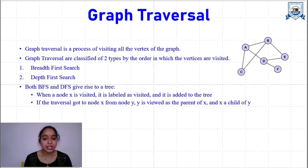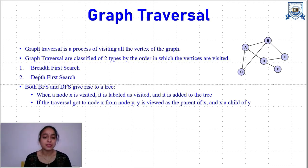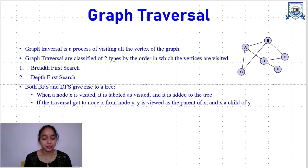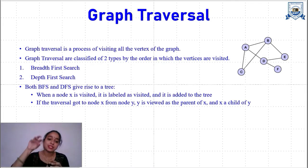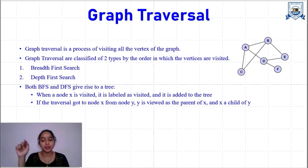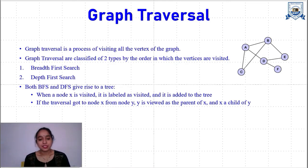When a node X is visited, it is labeled as visited and it is added to the tree. If the traversal goes from a particular node X to a particular node Y, then X is called the parent of Y. Or if a traversal goes to node X from a certain node Y, then Y is a parent node of X, or X is a child of Y. These are the graph traversal techniques.